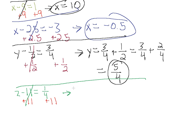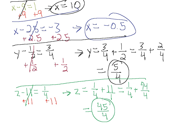This is going to cancel out leaving z on the left side. Over here we have 1/4 plus 11. We need to change this 11 to a rational number so we can add two rational numbers — let's write it over 1, and we need a common denominator. We multiply by 4/4, which gives us 1/4 plus 44/4. 1 plus 44 is 45 and we have 4 at the bottom. So z equals 45/4 is our answer.